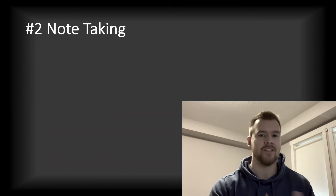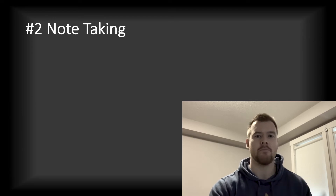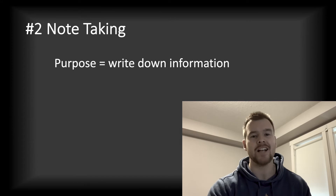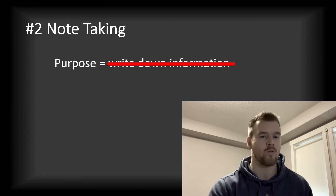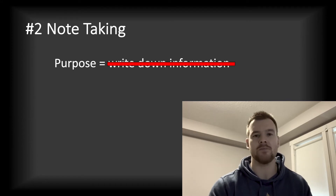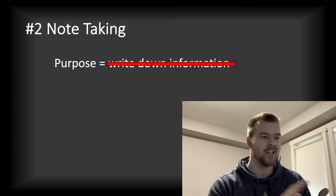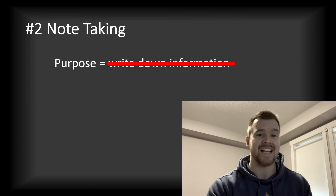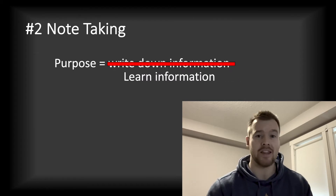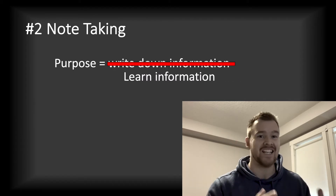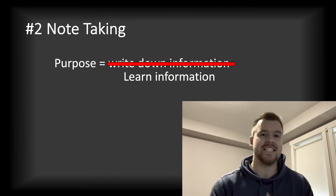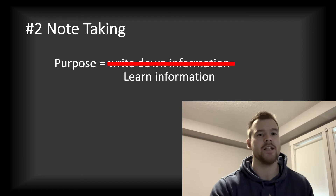Number two is note taking. This is a difficult skill, but I think it's because the purpose of note taking is often misunderstood. The purpose of taking notes is actually not to just write down material — that's what we have textbooks for. Just making another copy of a textbook isn't going to get you anywhere. The purpose is actually to learn the material — to make new neuron connections in your brain to understand a topic. How you do that is different for everyone, but it has two key components: interacting with the information, and thinking.